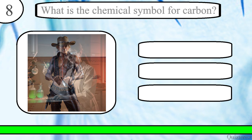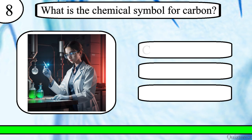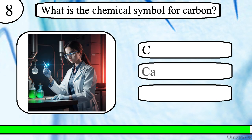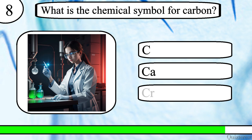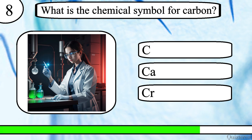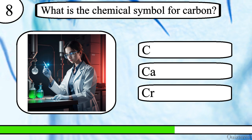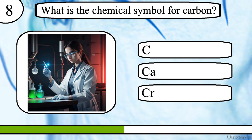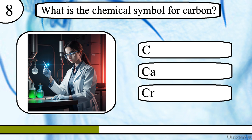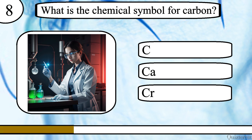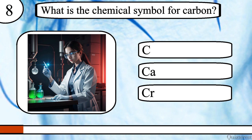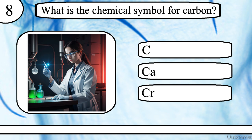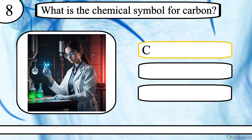Question 8. What is the chemical symbol for carbon? C, CA or CR? The correct answer is C.